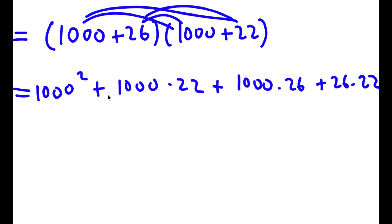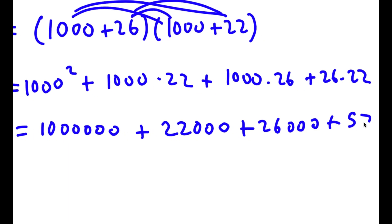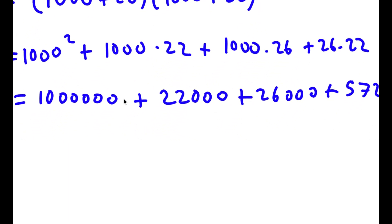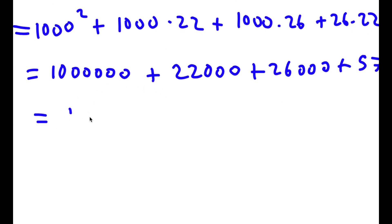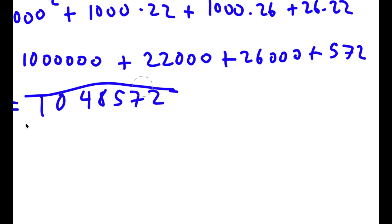It's much simpler to solve. 1000 squared is 1 million. 1000 times 22 is 22,000. 1000 times 26 is 26,000. And 26 times 22 is 572. So now to add all these up: 1 million plus 22,000 plus 26,000 is 1,048,000, and we have 572 at the end. So the answer is 1,048,572.